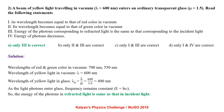A beam of yellow light traveling in vacuum with wavelength lambda equal to 600 nanometers enters ordinary transparent glass with refractive index mu equal to 1.5. The statements to evaluate are: its wavelength becomes equal to that of red color in vacuum; its wavelength becomes equal to that of green color in vacuum; energy of the photons of the refracted light is same as that of the incident light; or energy of photons decreases. The wavelengths of red and green light in vacuum are 700 nm and 550 nm respectively.